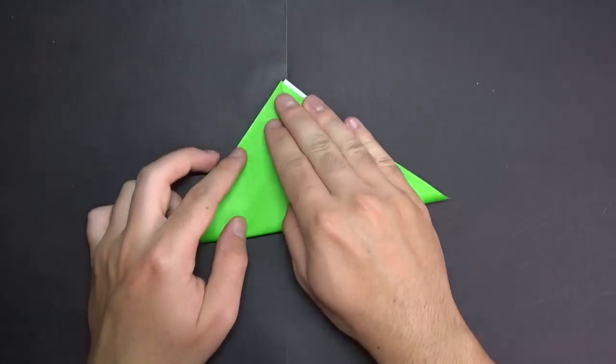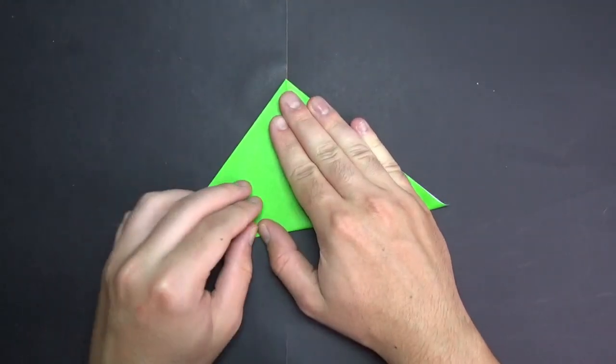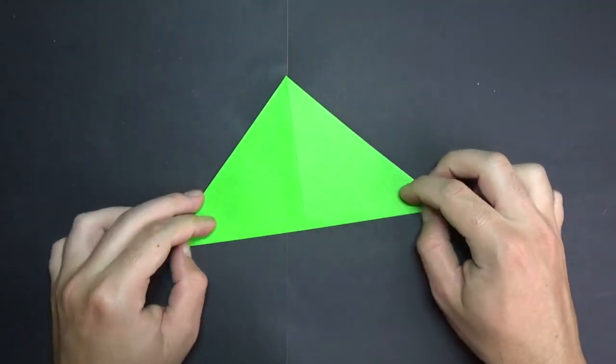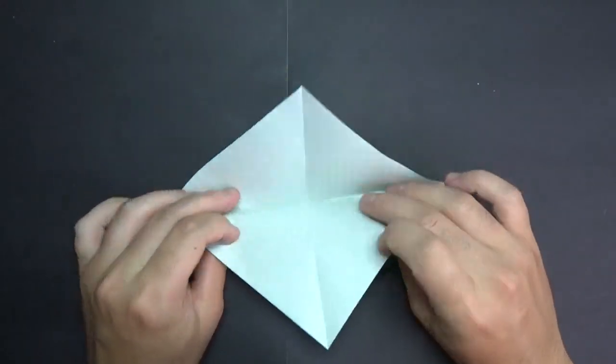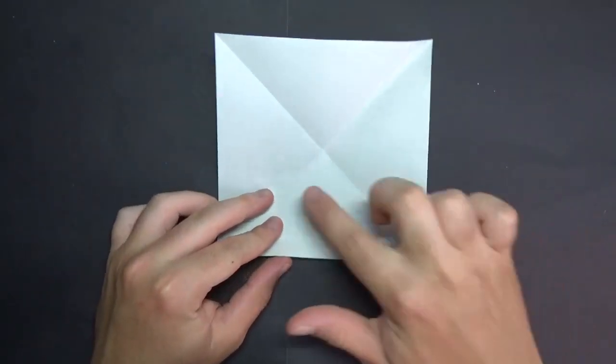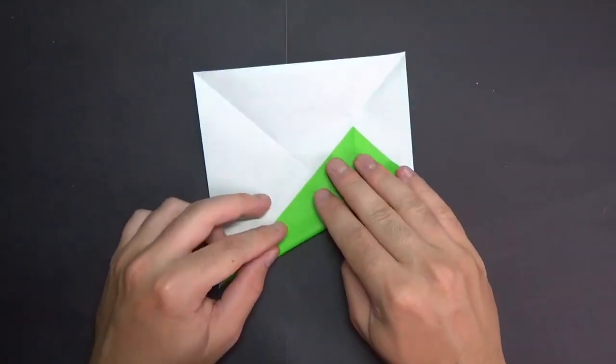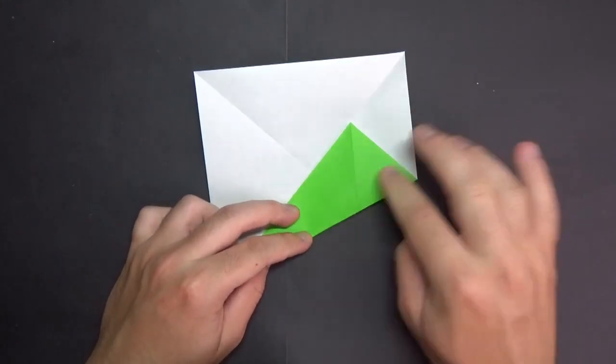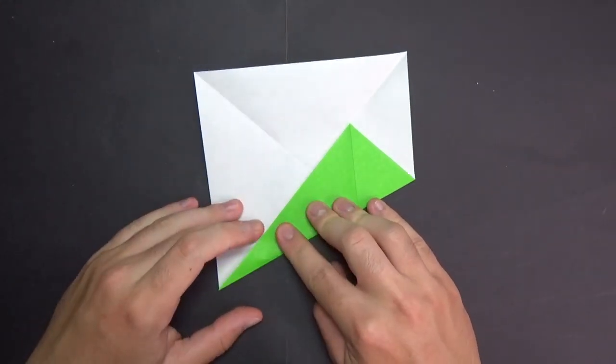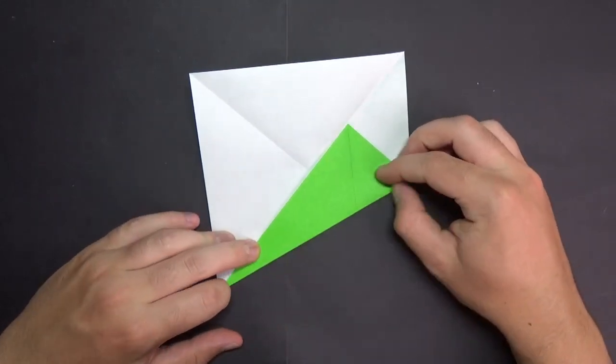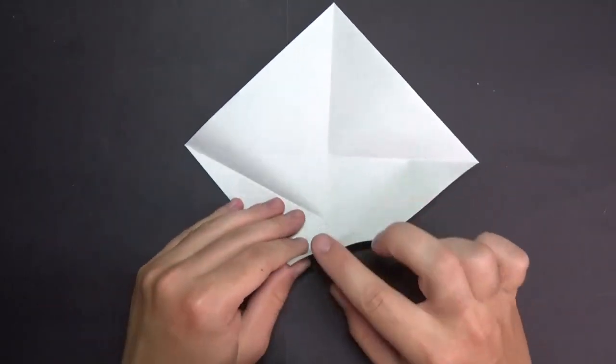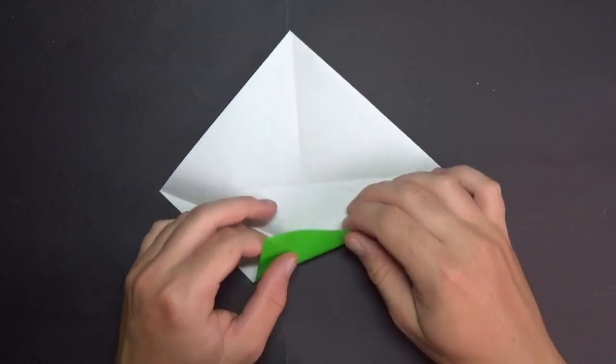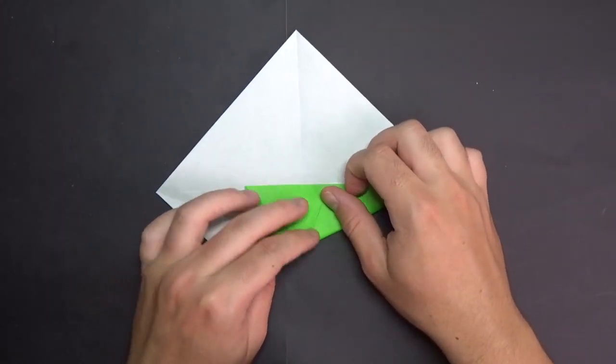Unfold, and fold in half this way. Okay, unfold, and fold this edge to the middle. Unfold, and fold this edge to the middle. No, we're not making a fish base, by the way.